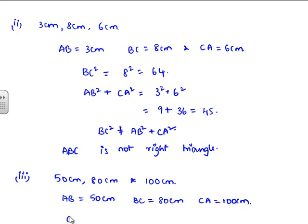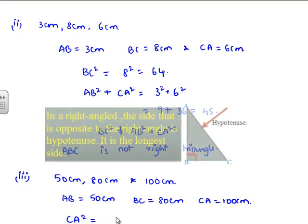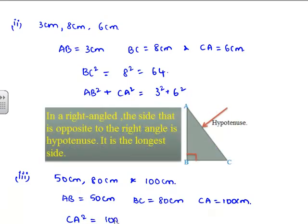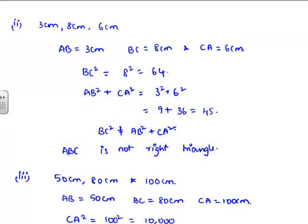Now let us take the largest side squared, which is CA squared. That equals 100 squared, which is 10,000. And now we shall